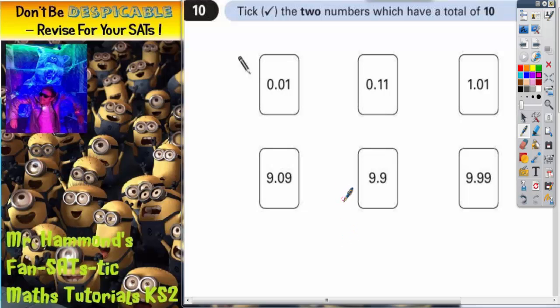The biggest advice I can give you is whichever two you tick, check with a column method, an addition column method, that it actually adds up to 10. Too many people tick two numbers and then just move on, assuming that they've got the answer correct when actually they've got it incorrect and a quick check would have told them that.